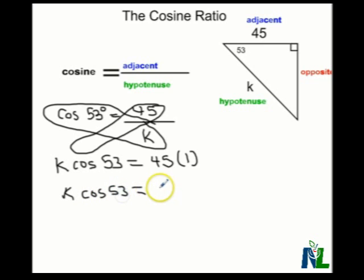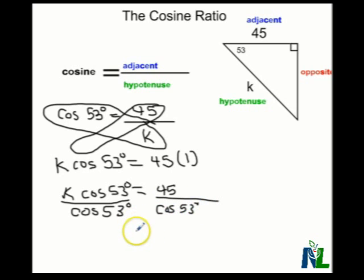What we do is rewrite the equation. How do we get rid of that multiplied by cos 53 degrees? We divide by cos 53 degrees. But what we do to one side, we have to do to the other, so we divide this side of the equation by the cosine of 53.